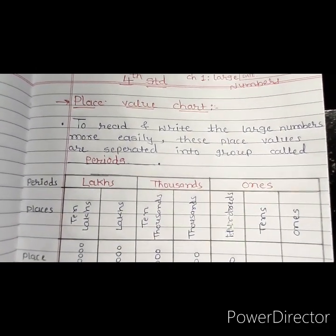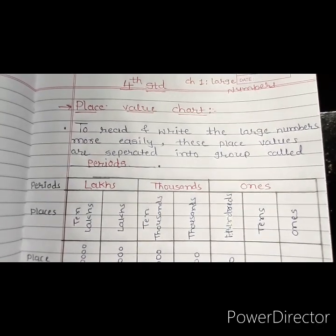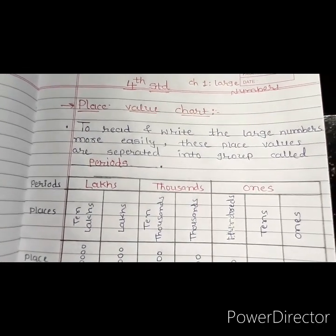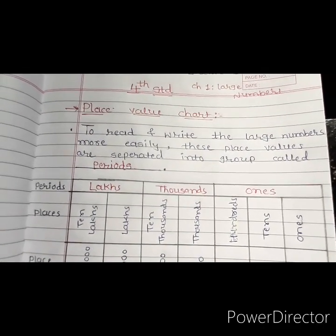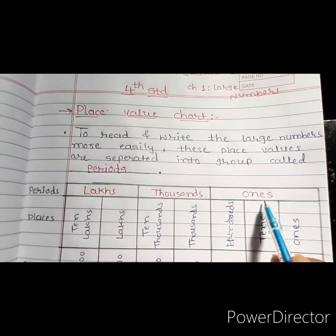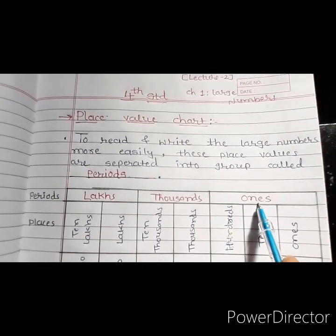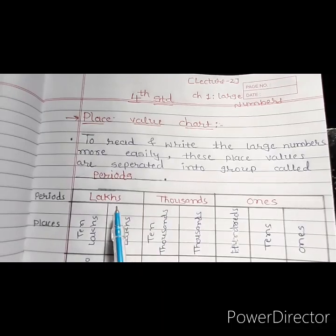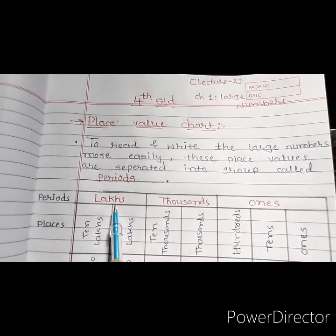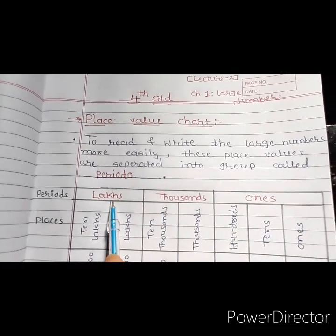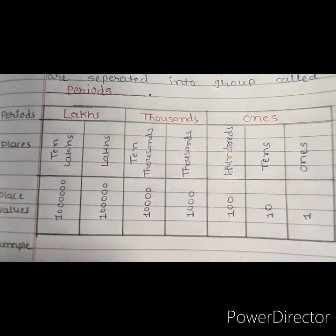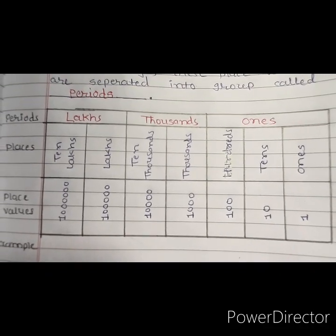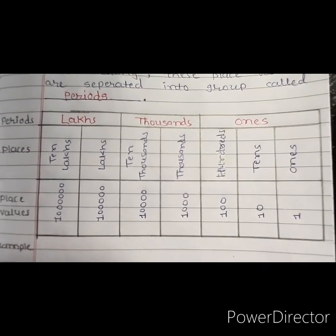So students, in the Place Value Chart, we are going to learn about only 3 periods in Class 4. So if you are reading from the right side, the first one is Ones, then Thousands, then Lakhs. So here, 3 periods we are going to learn, and each period contains some places.